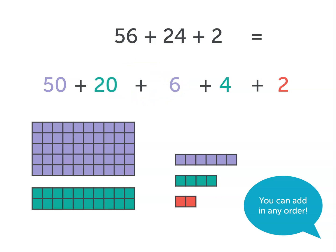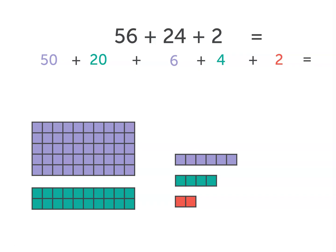Essentially, we would add 50 plus 20 plus 6 plus 4 plus 2. Adding the tens place value of 50 plus 20 gives us a total of 70.